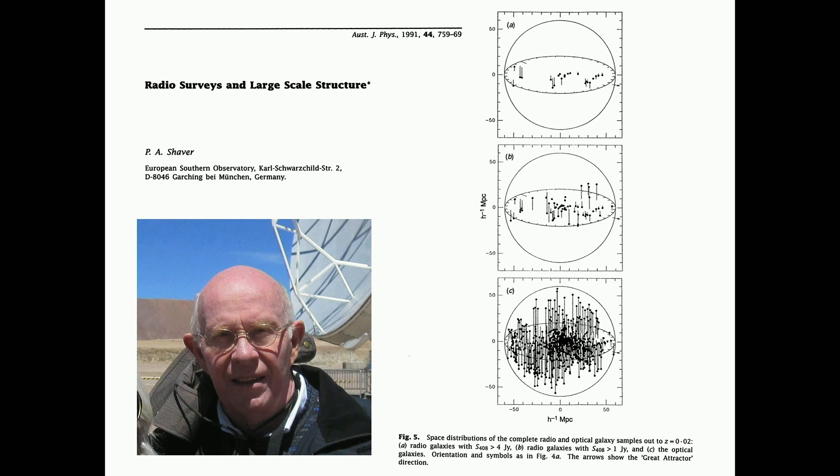That is, Gérard gave the name local supercluster. Remarkably flat distribution. They did not anticipate how flat it would be found out to be. Here is Peter Shaver, and here is the diagram he plotted, produced, back in the early 1990s. I've got to explain this. We have a sphere of radius about 100 megaparsecs.